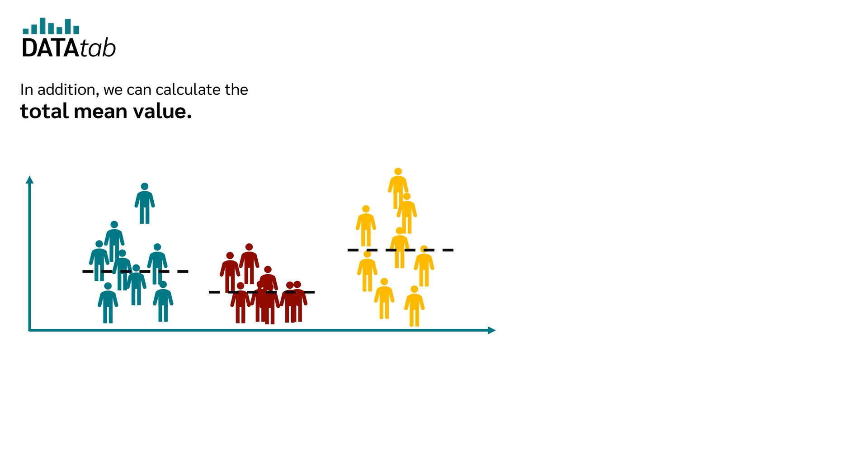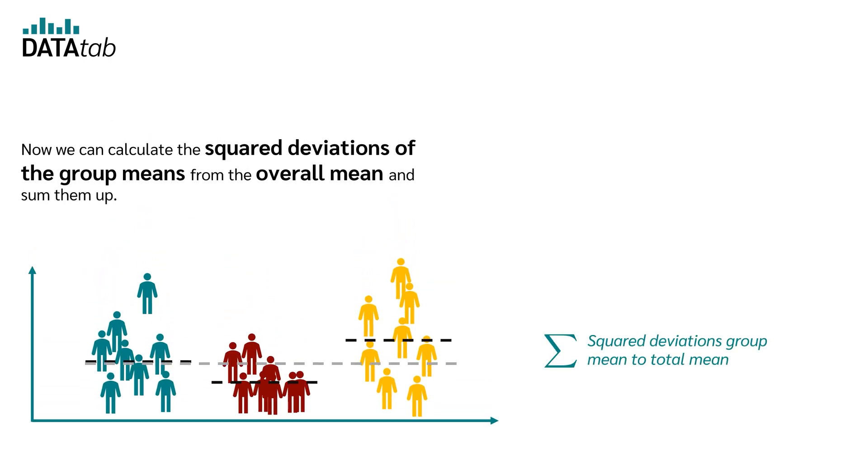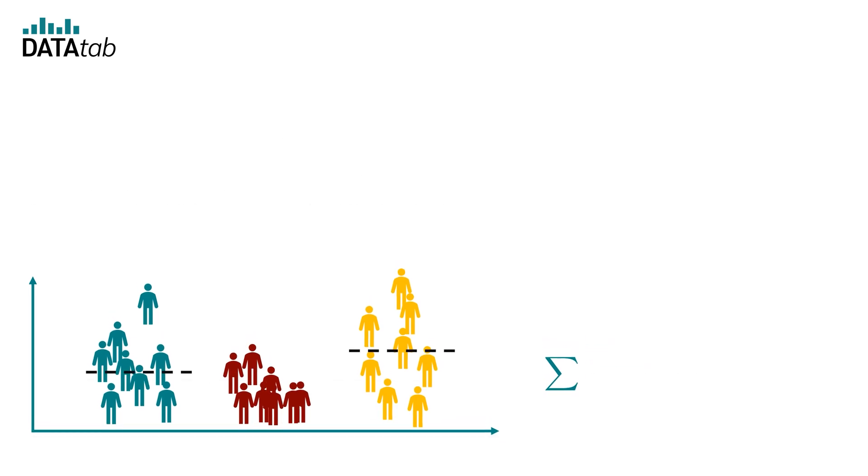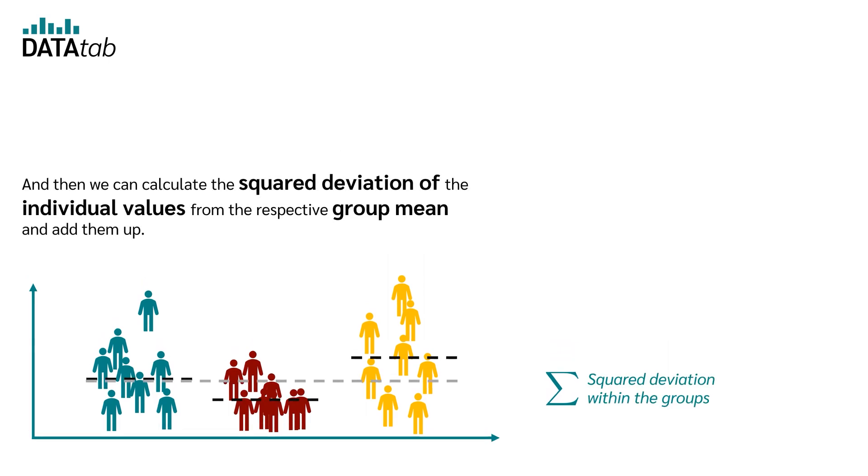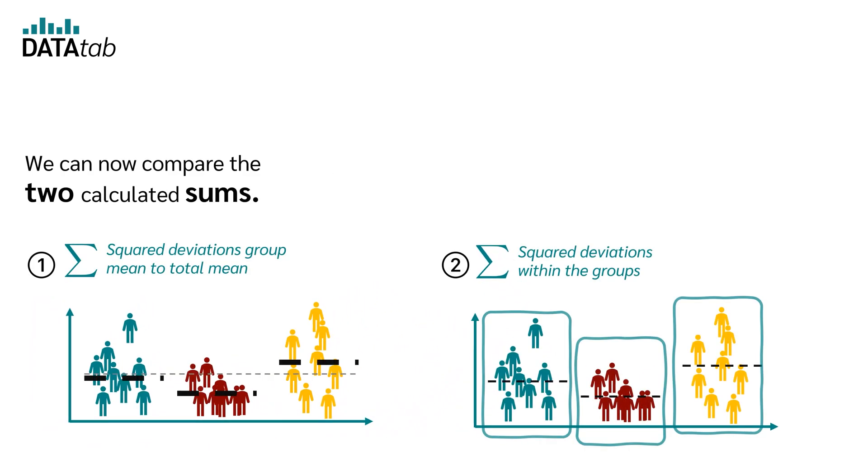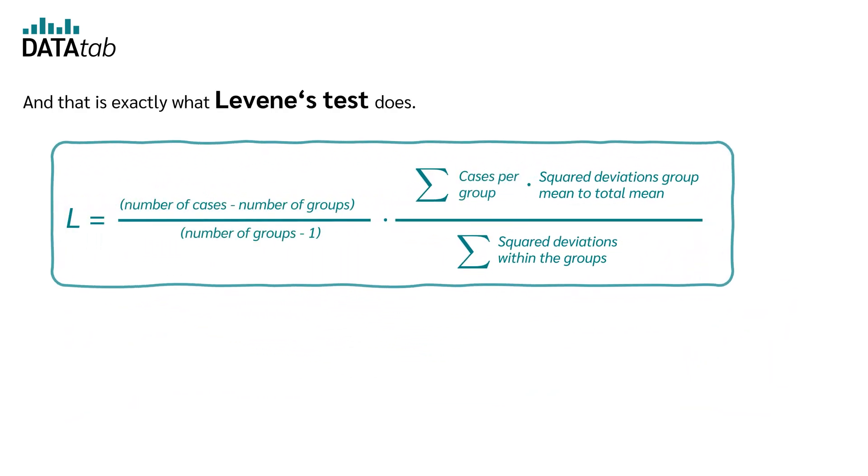In addition, we can calculate the total mean value. Now we can calculate the squared deviations of the group means from the overall mean and sum them up. And then we can calculate the squared deviations of the individual values from the respective group mean and add them up. We can now compare the two calculated sums. And that is exactly what Levene's test does.